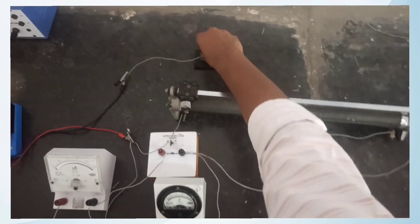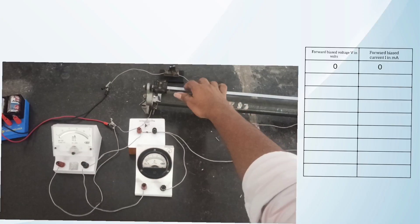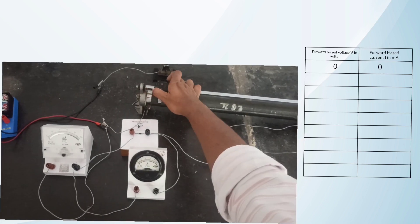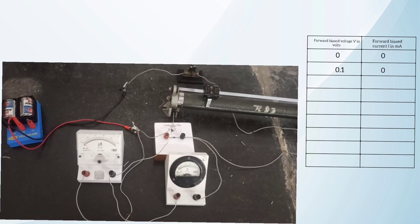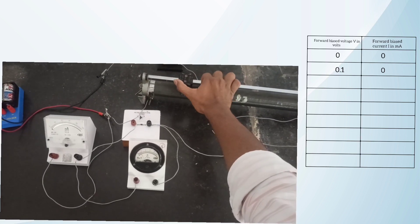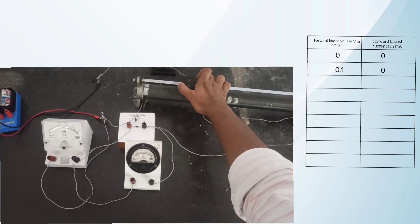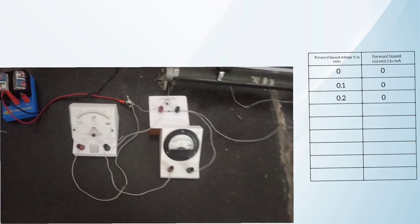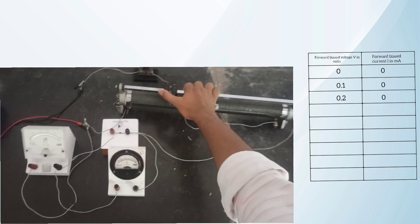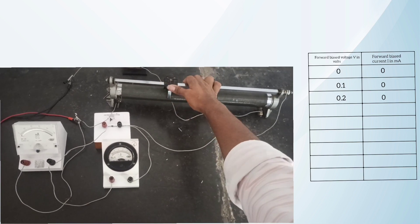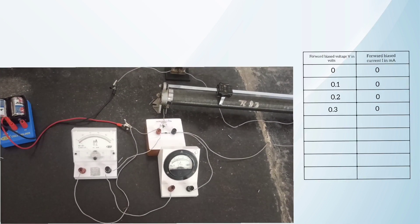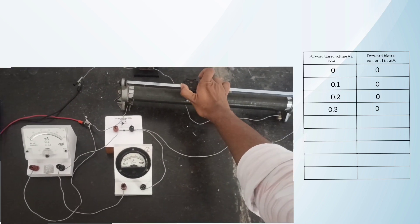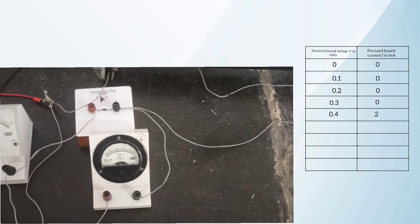Now closing the key. The potential is 0 and the forward bias current is also 0. Increasing the voltage to 0.1 V — current is also 0. Increasing to 0.2 V — forward bias current is 0 only. For 0.3 V it is also 0. Now further increasing to 0.4 V, we get a current of 2 mA.